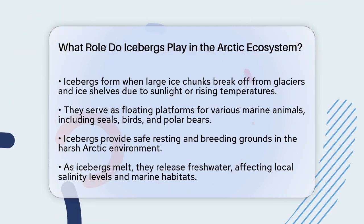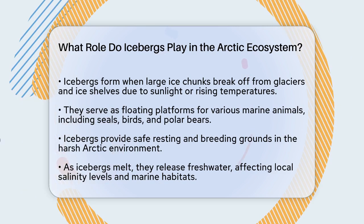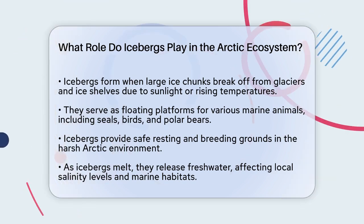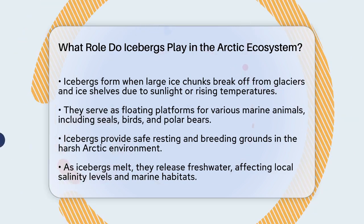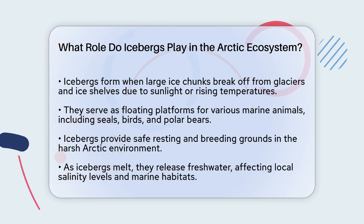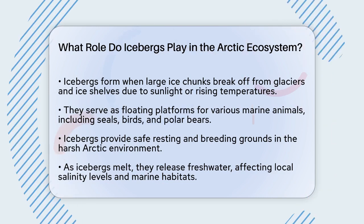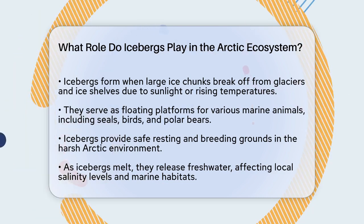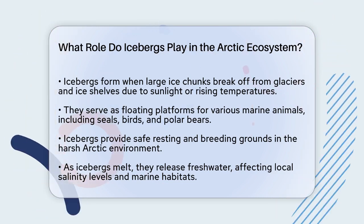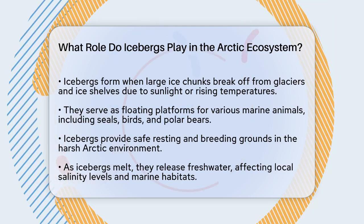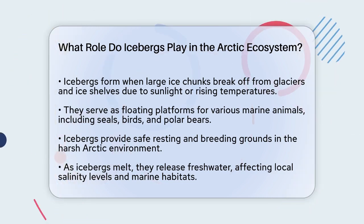Icebergs are formed when large pieces of ice break off, or calve, from glaciers and ice shelves. This process is often triggered by direct sunlight or rising air temperatures that make the glacier's surface ice more brittle.